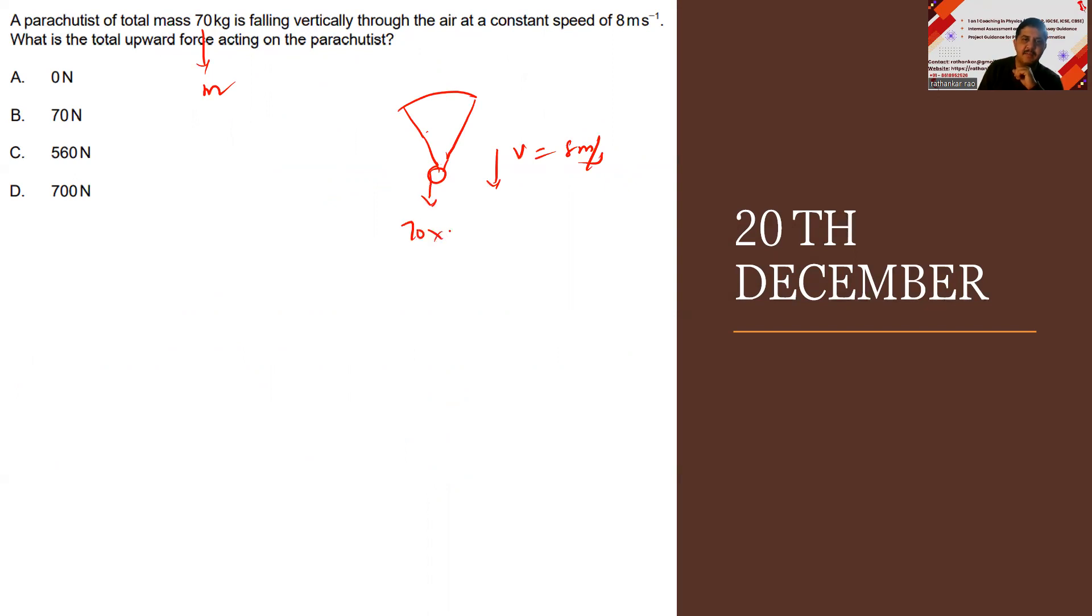When you're 70 kg, the force acting on this is 70 multiplied by g, which is equal to 700 newtons. What is the total upward force on the parachute? Very simple. If 700 newtons is acting downward, 700 newtons should act upwards also. Why upwards? The reason is because it's moving with a constant velocity. When the force acting on a particle is equal and opposite, only then the particle will move with a constant speed. Therefore, D is the right answer.